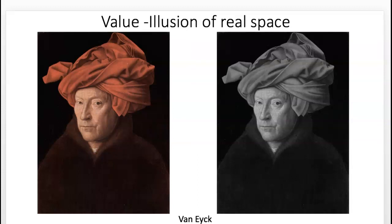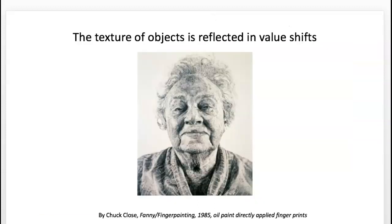Texture is also reflected in value shifts. This piece is interesting because it's made by finger painting — fingerprints applied over and over again to create this image. This is Chuck Close; it's about his wife's grandmother. It has to do with identity and the conceptual idea of the fingerprint being a one-of-a-kind original thing connected to him and his connection to this person. It also shows how texture built up can create imagery through value.